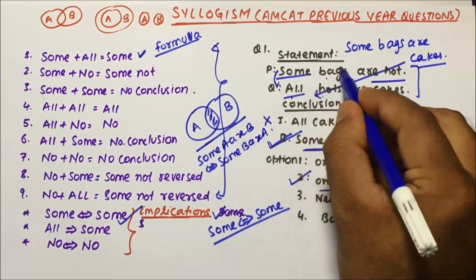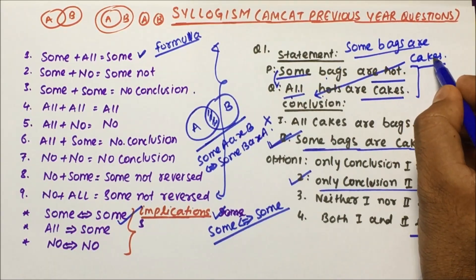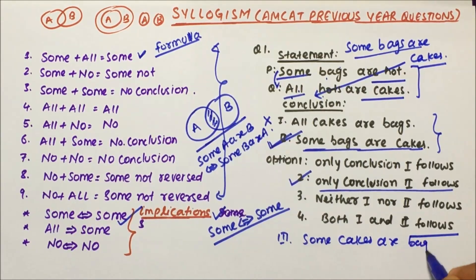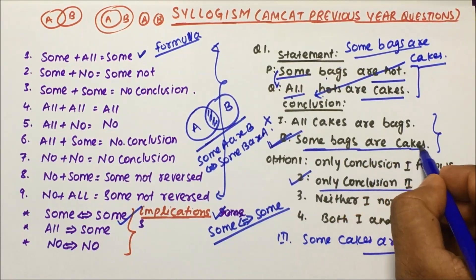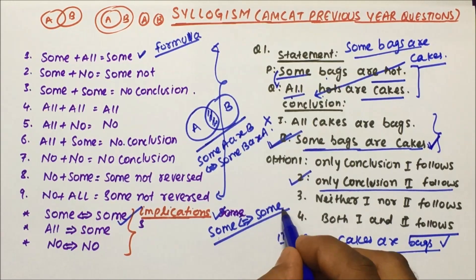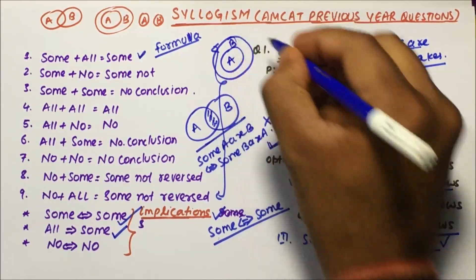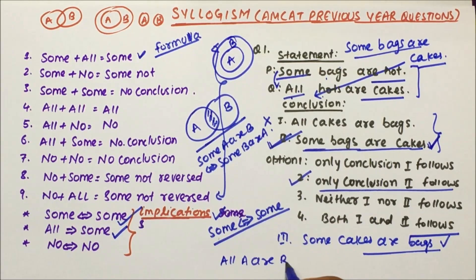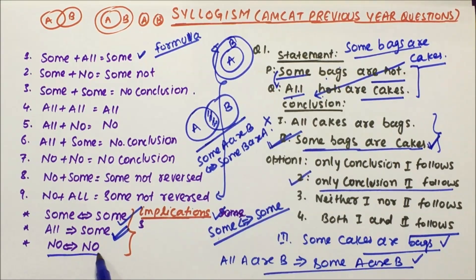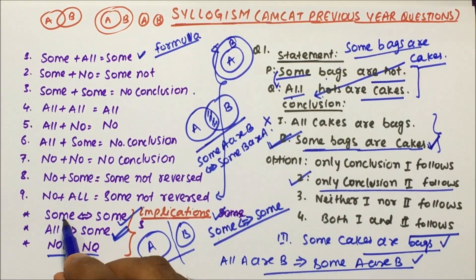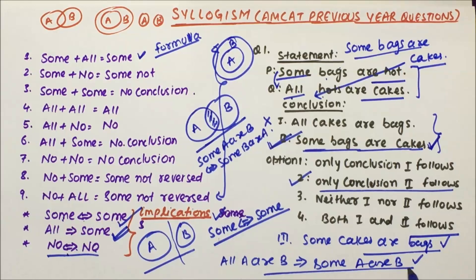In the first question, hot and hot cancelled, giving some bags are cakes. Because of the implication — if some A are B then some B are A — if there were a conclusion 'some cakes are bags,' that would also be true. For 'all': if all A are B, then you can only say some A are B (one-way implication). For 'no': if no A are B, then you can also say no B are A — it is reversible.